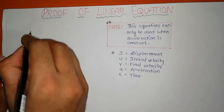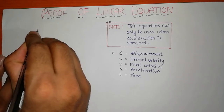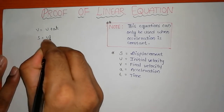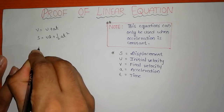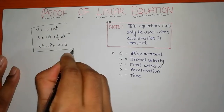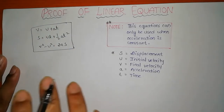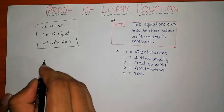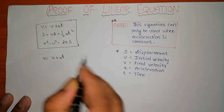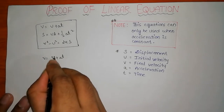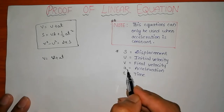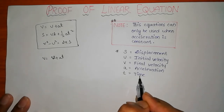As you know, there are three kinds of equations: V = U + AT, S = UT + ½AT², and V² - U² = 2AS. We are going to derive these three equations. V is final velocity, U is initial velocity, S is displacement, A is acceleration, and T is time in seconds.